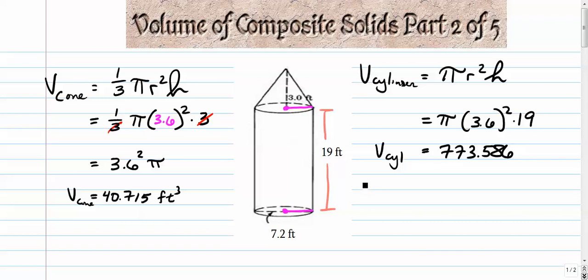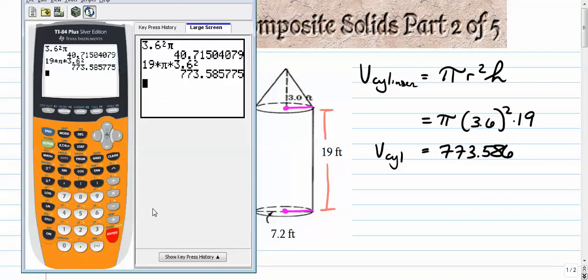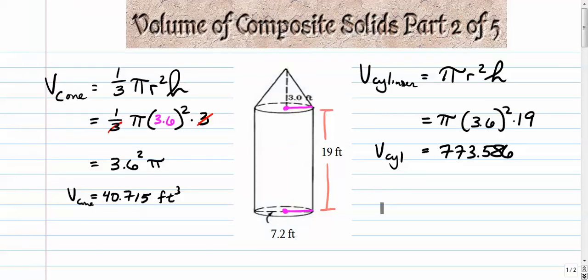And all we want to do is add those two together. So we're going to take this right here and add it to this right here to get our total volume. So I'll just press plus 40.715. 814.301, we'll call it that, 814.001 cubic feet.